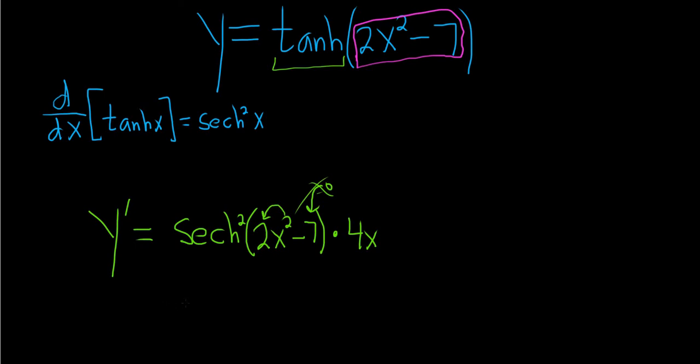So last thing to do maybe is put the 4x in the front. So 4x hyperbolic secant squared of 2x squared minus 7.